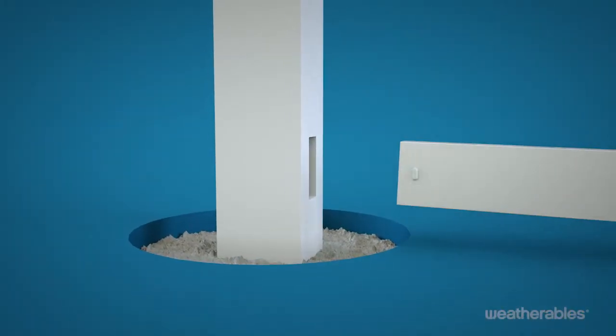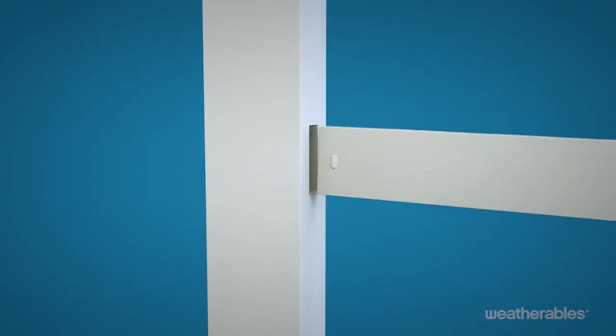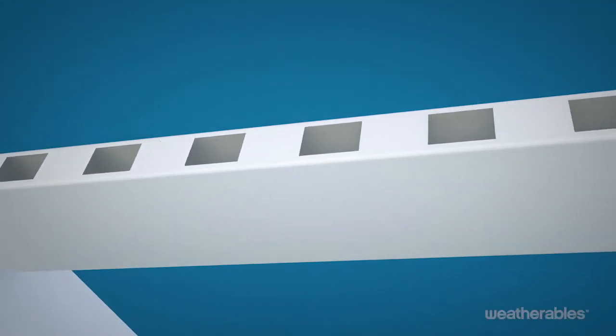Next, slide the bottom rail, the one with the aluminum insert, and the top rail into the routed holes in post A. The top rail will have routed holes on the top and bottom of the rail. You'll want to make sure that the larger routed holes are facing towards the ground.